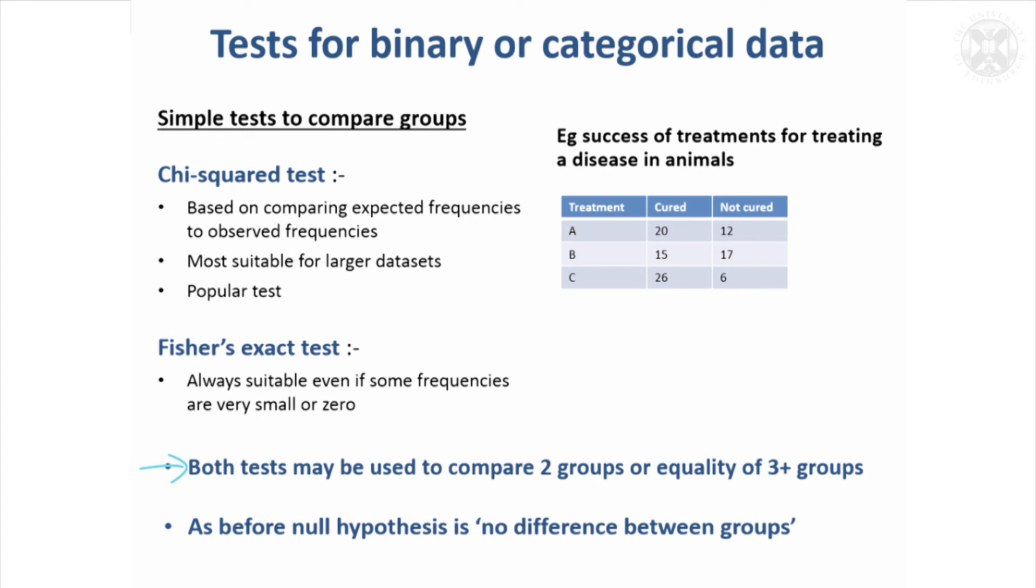Both tests can be either used to compare two groups with categorical or binary data or also the equality of three or more groups. But just as we saw for hypothesis testing for continuous data, the null hypothesis is still going to be that there's no difference between the groups, and the chi-squared test or the Fisher's Exact Test is going to seek to disprove that.